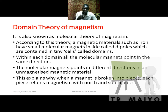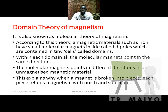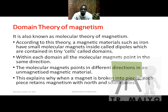Welcome to our magnetism lesson — this is a continuation. Today I want to start by looking at the domain theory of magnetism. A theory is a presented set of ideas or explanation somebody gives regarding a certain phenomenon; it is open to discussion. We have many theories — the theory of evolution, theories in geography explaining the shape of the Earth, and in physics we have theories as well.